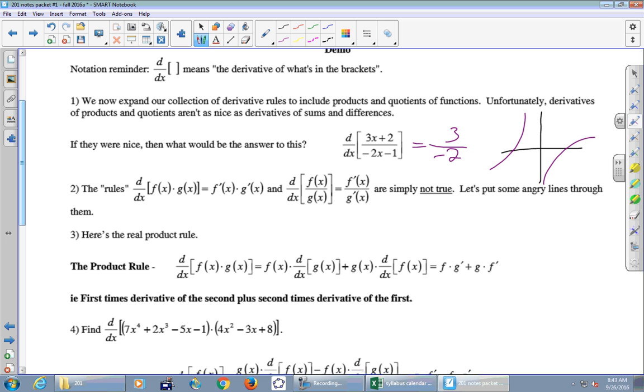So unfortunately, you can't just naively take derivatives of quotients the way you might hope that you could. So number 2, so I'm going to put a big line here. No good. Number 2 says the quote-unquote rules that the derivative of f(x) times g(x) is as simple as doing f prime and g prime and multiplying them at the end. And then what we just did here with a quotient, the derivative of f over g just being f prime over g prime are simply not true. Let's put some angry lines through them. So do not do that. You cannot do. Let's get whatever anger you got stored up inside and get it out. Put lots of x's and things through that. It is no good.